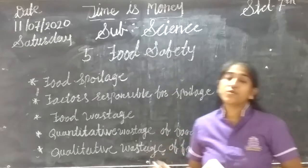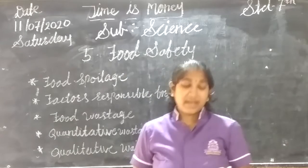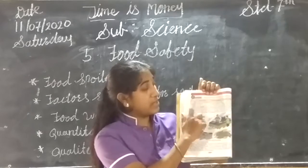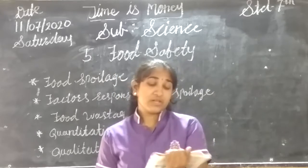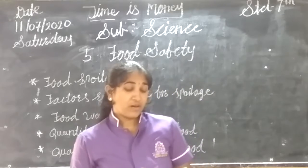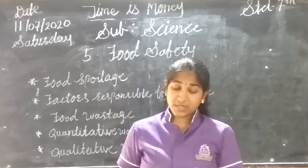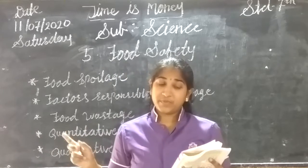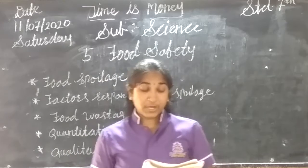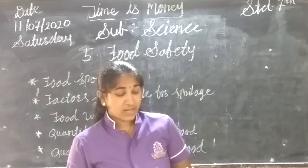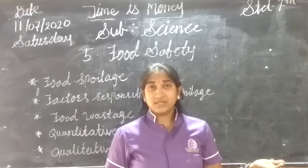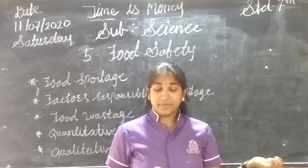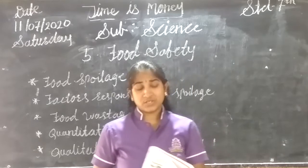About this we are going to learn in this lesson. Can you see on page number 34 there is one table given. In that table, there is one column for the food, second is the nutrition obtained, and what is the function in the body. You have to give the answer: what nutrition we got from these foods and what their function is.